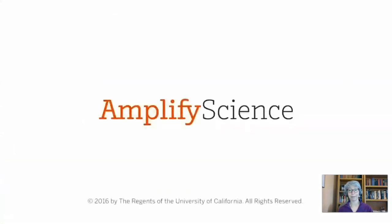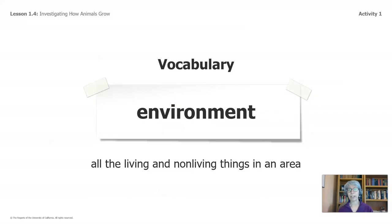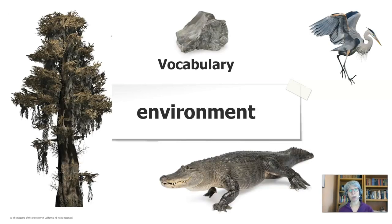We've been using the word environment — let's take a pause and think about this word. The environment is all the living and non-living things in an area. When we read the book, we saw different pieces of the environment in the Florida Everglades: the cypress tree, the alligator, heron, and rocks — all make up the environment in the Florida Everglades. If you and your family's culture define living and non-living differently, this would be a great opportunity for you to talk about those differences.